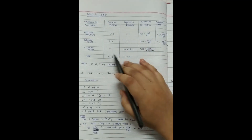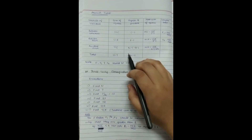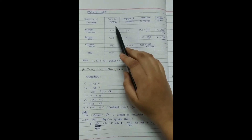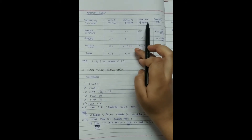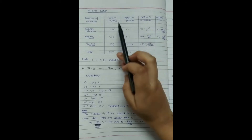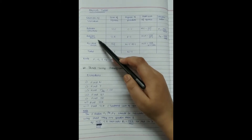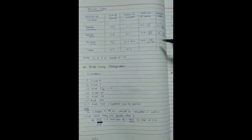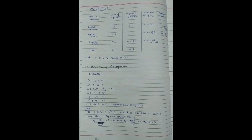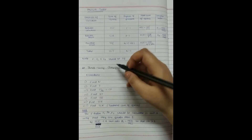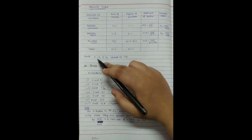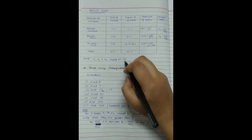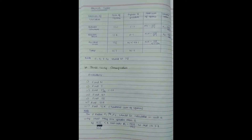The ANOVA table for two-way classification includes sources of variation (between columns, between rows, residual error, and total), sum of squares, degrees of freedom, mean sum of squares, and variance ratio. We fill in the table with the previously calculated values. It is important to note that both Fc and Fr should be greater than 1. If either is not greater than 1, we calculate its inverse.